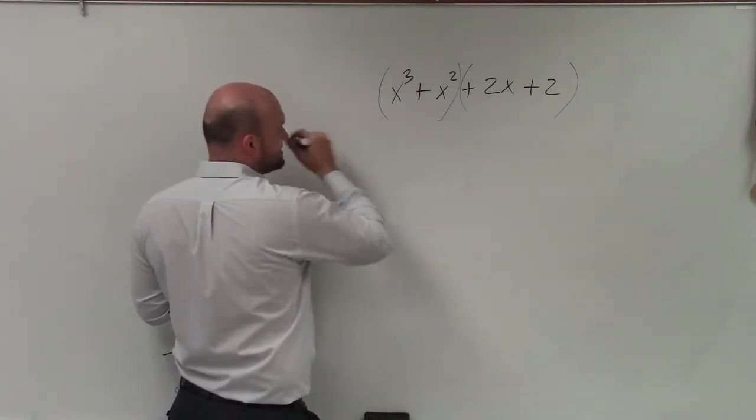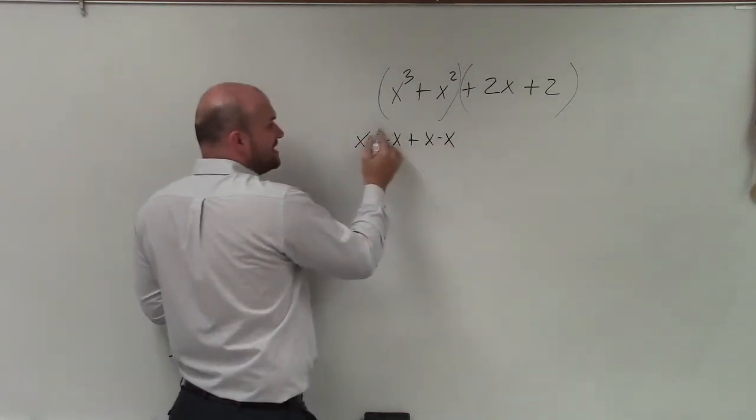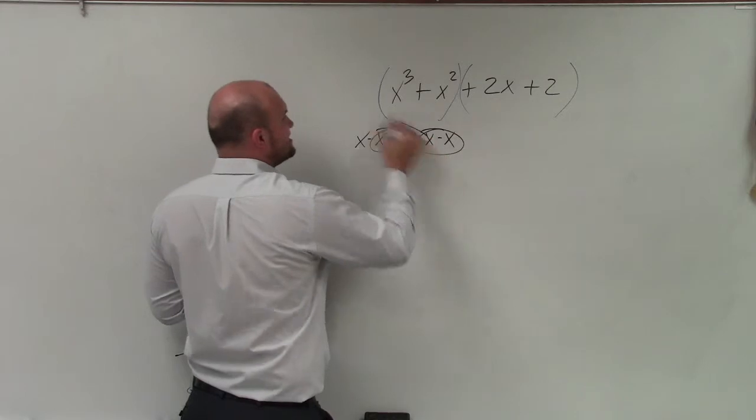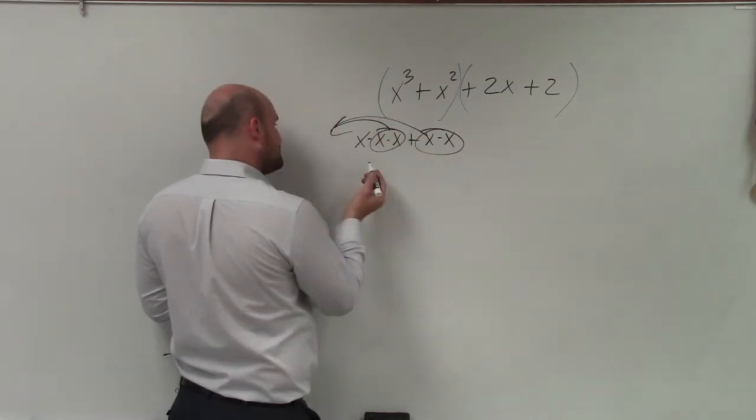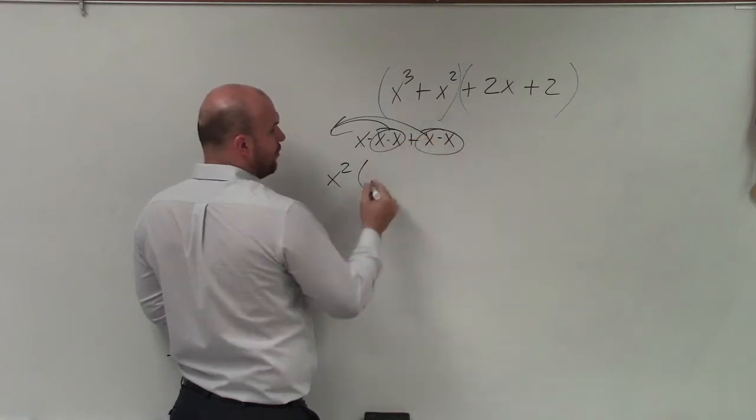Well, basically what this is is x times x times x plus x times x. So you can see I can factor out two x's out of both of them. So two x's, which would be x squared, and that leaves me with x plus 1.